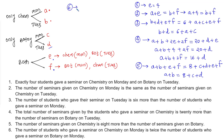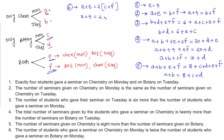Statement 6: the number of students who gave seminar on chemistry on Monday (A plus E) equals 2 times the number who gave seminar on botany on Monday (C plus F). So A plus E equals 2(C plus F). With E equals 4, this gives A plus 4 equals 2C plus 2F. This completes all six statements.